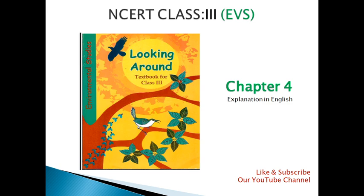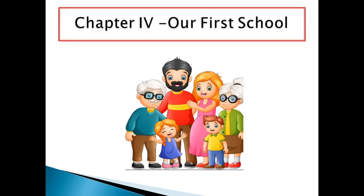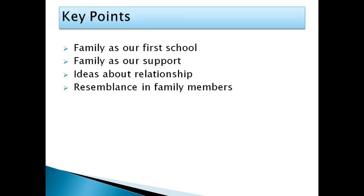Hello everyone, today I am explaining NCRT Class 3 EBS Chapter 4. The name of the chapter is 'Our First School.' In this chapter, we will cover key points like family as our first school, family as our support, ideas about relationships, and resemblance in family members.